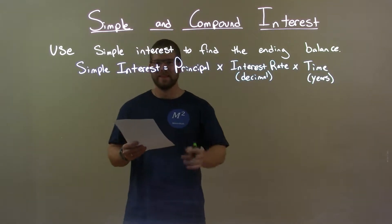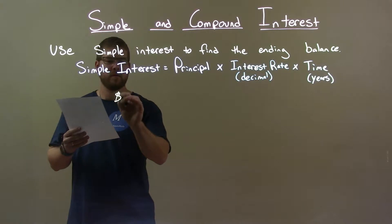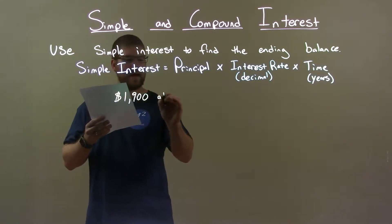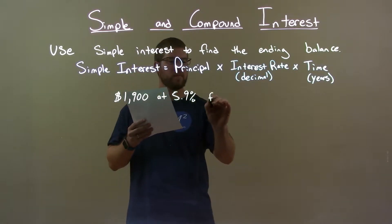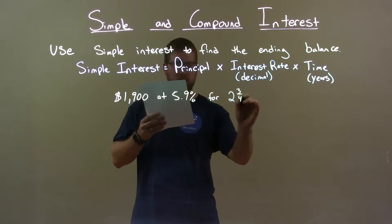Now, I was given this problem: $1,900 at 5.9% for two and three quarters years.